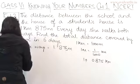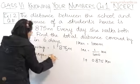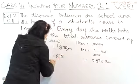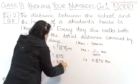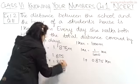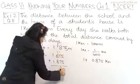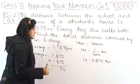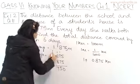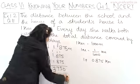Since she walks both ways, we need to add the distance for both trips: 1.875 plus 1.875. So: 5 plus 5 is 10, 7 plus 7 is 14 plus 1 is 15, then 8 plus 8 is 16 plus 1 is 17, carry 1 — giving us 3.750 km.